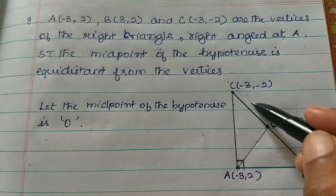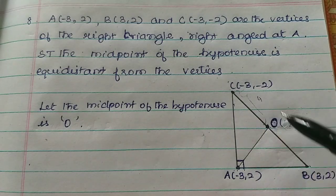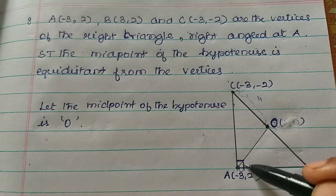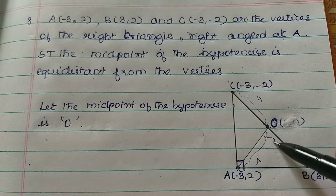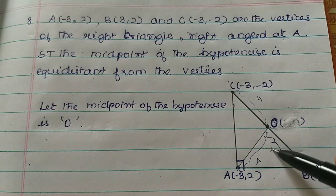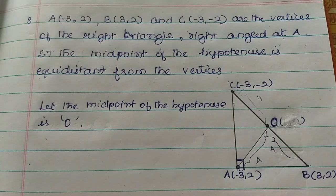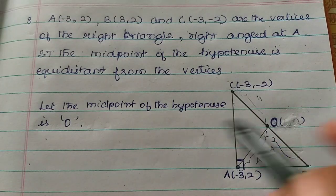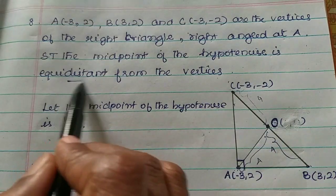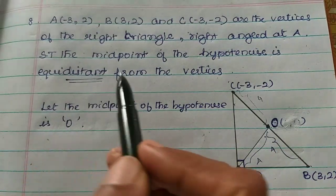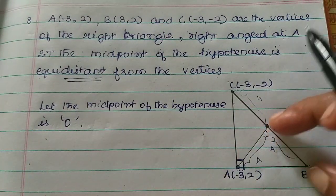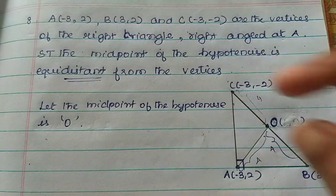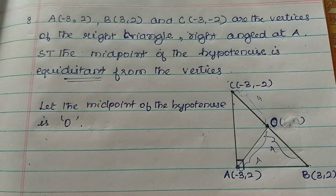This is 4cm, this is 4cm, and this is 4cm — they are equal distance. Let's prove it. We need to find OA, OB, and OC distances.